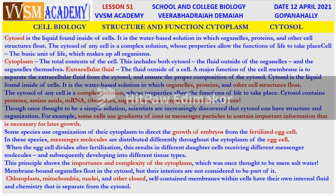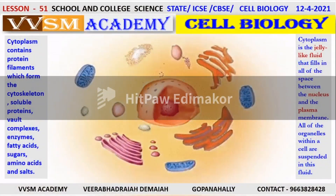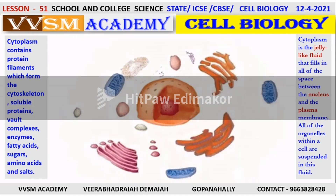Cytosol contains proteins, amino acids, messenger RNA, ribosomes, sugars, ions, messenger molecules, and much more. It is a complex chemistry — biochemistry, my dear friends. These are the important things in cell biology.